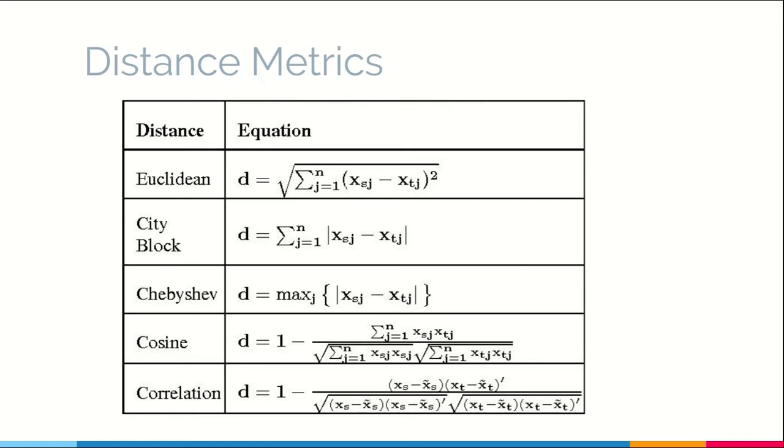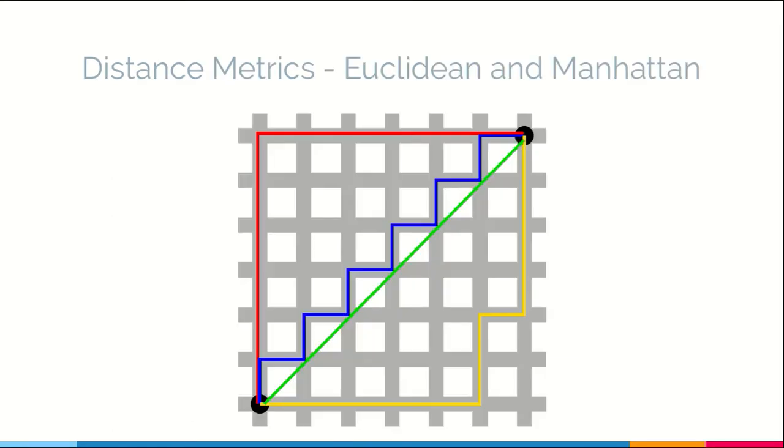Now moving on. So you need not worry too much about the mathematics as the concepts that come later are more important in this case. Now in the Euclidean distance, let us say that these two are the given points. The shortest distance between these two, that is the aerial distance or the distance as a crow flies would be the Euclidean distance.